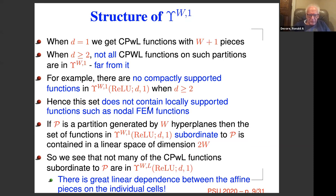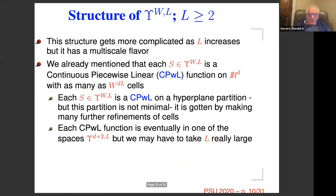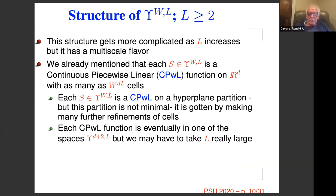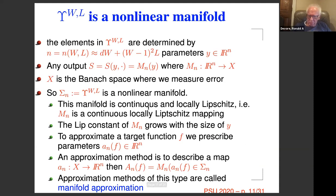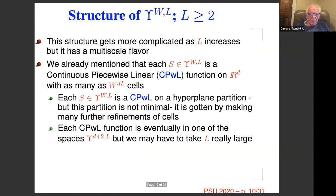As L gets bigger than or equal to two, things begin to free up — this is one of the reasons why we like deeper networks. When L is two, you do get compactly supported functions. And if you take L bigger than log(D+1), you get the finite element nodal basis. So you have now entered a domain where we have good locally supported bases that we can use to build approximations.